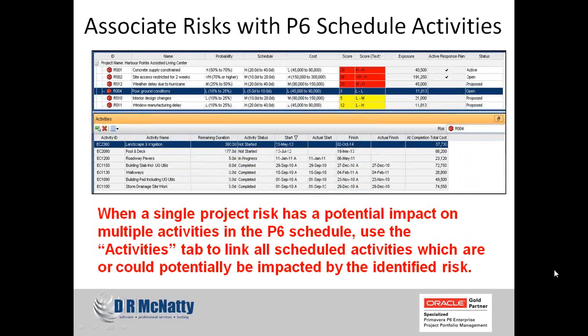If using a response plan and some actions relate to schedule items, I can click on the column for activities. When I do that, it will open up all of my activities grouped by WBS, and I can select a particular activity that most closely aligns with the particular action item in the response plan. At a higher level — at the overall risk level — I can associate one risk with multiple activities in the schedule. Here is an example where risk ID R004, poor ground condition, has seven different activities in the current schedule potentially impacted by this particular risk.